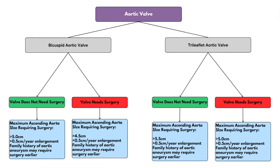There are two more important caveats. First, if we're monitoring your aortic root and it grows by more than 0.5 centimeters in any one year, you will probably need an operation. Second, if you have a family history of aortic aneurysms, aortic rupture, or aortic dissection, we may use a lower threshold for operating on your ascending aortic dilatation or aortic root aneurysm.